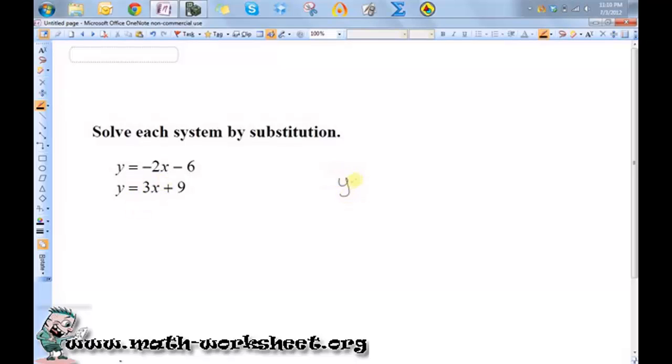So what I'm going to do is I'm going to take the first equation, which is y equals negative 2x minus 6, and instead of having a y here, I'm going to put what the second equation says y equals. This is 3x plus 9.